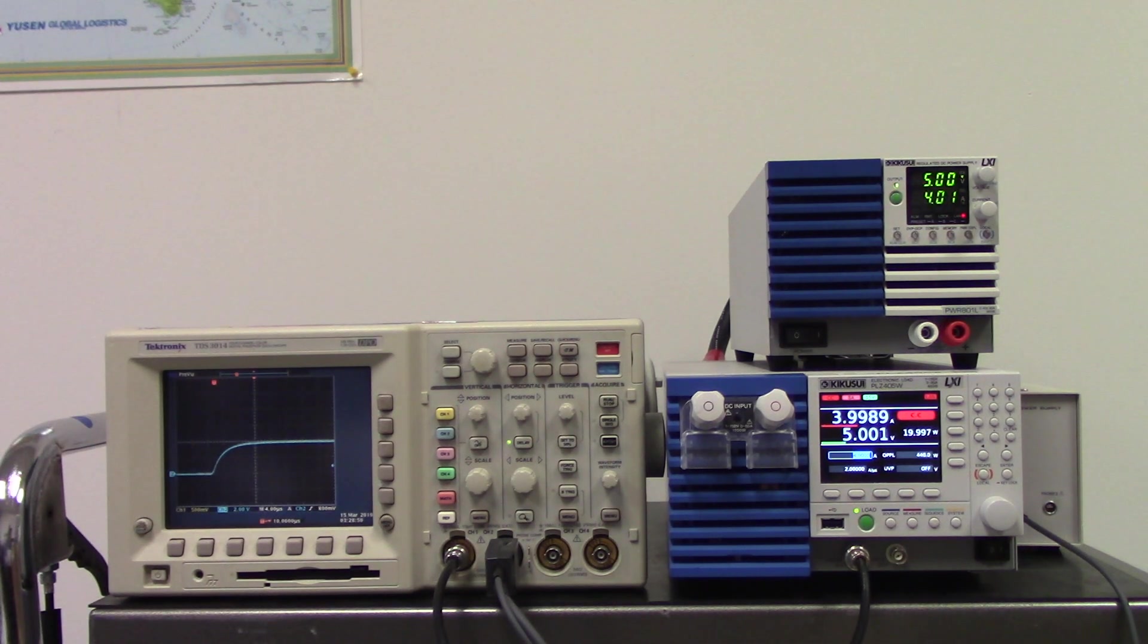To compare the current measurement features, when measuring using a current probe it will show the measurement value of 3.9954A when input voltage is at 5V and current is at 4A.